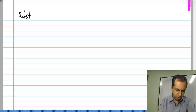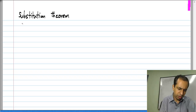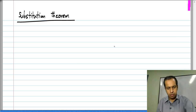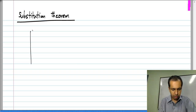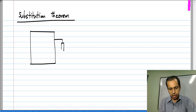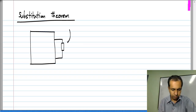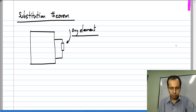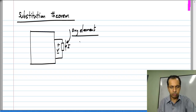In this lesson, we will consider another elementary circuit theorem known as the substitution theorem. Let us consider a circuit with some element — this element could be non-linear as well. Let us say it has some voltage V across it and some current I through it.